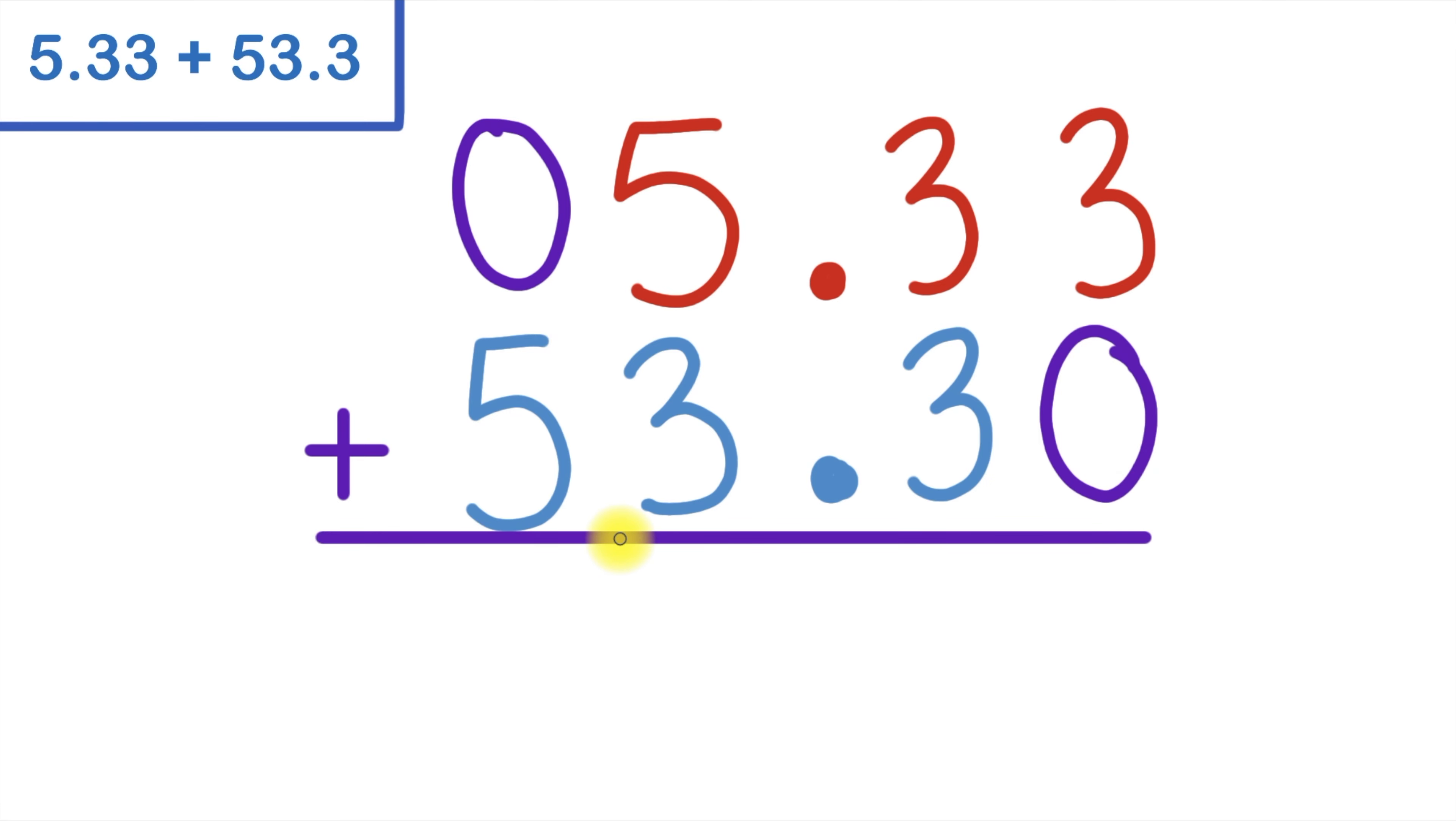But just a brief reminder: the reason why lining up my decimal points is important is because what it really does is it lines up our place values. You may not have noticed it, but we ended up lining up our hundreds place, our tens place, our ones place, and our tenths place. And since all those place values are properly lined up, we can get to work without worrying about running into any issues.